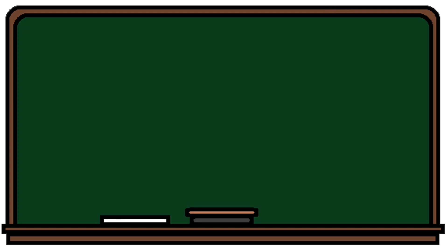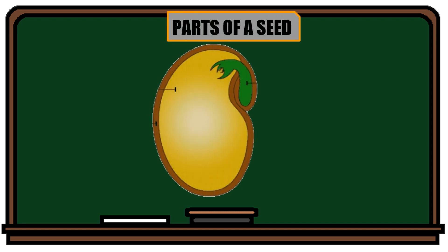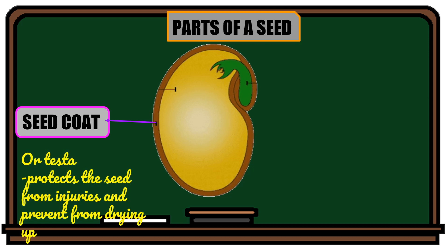Class, can you name the parts of a seed? A seed has a seed coat. The seed coat is the outer covering of the seed, also called the testa. It protects the seed from injuries and prevents it from drying up.